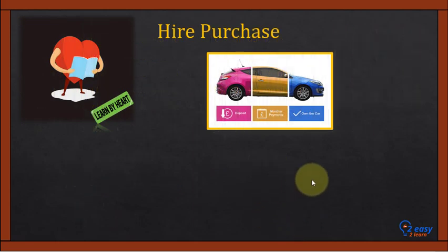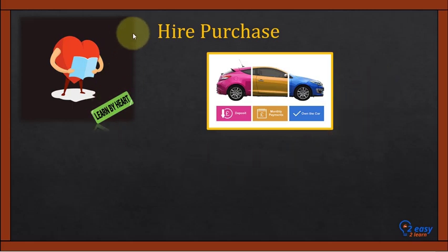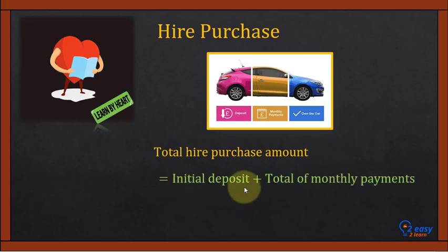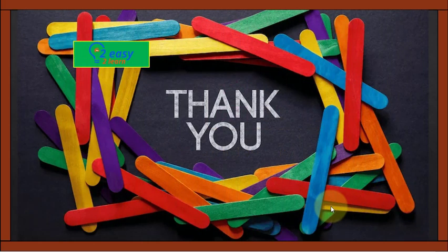That is the end of the lesson. Practice these questions — pause the video, solve the problem, and check your solution. Remember: hire purchase definition, its components — initial deposit and monthly installments — and the formula: Total Hire Purchase Amount = Initial Deposit + Total Monthly Payments. See you in the next lesson. Thank you.